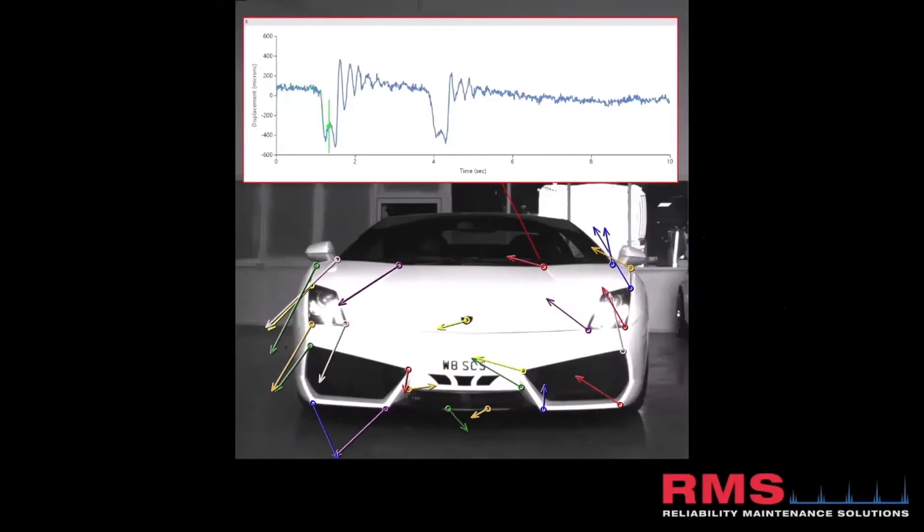But this is them revving the engine. You can draw a box anywhere on the screen, and you can see these motion vectors. And you just place those instantly on the video, as many as you want.